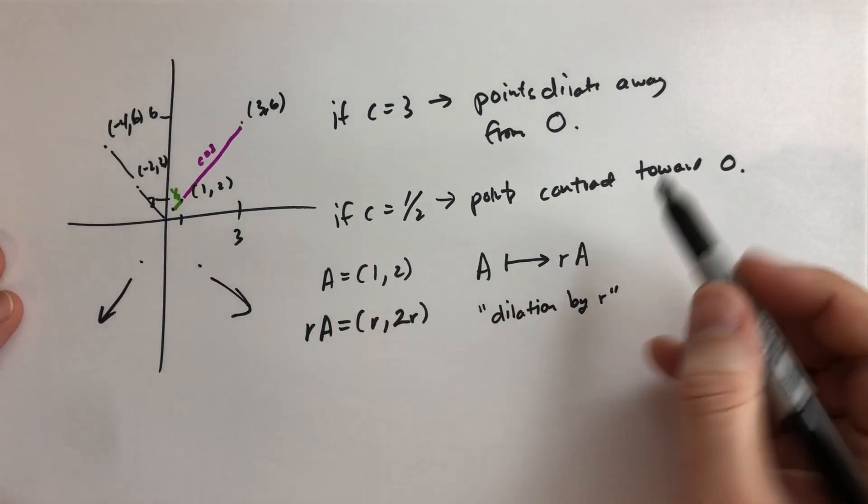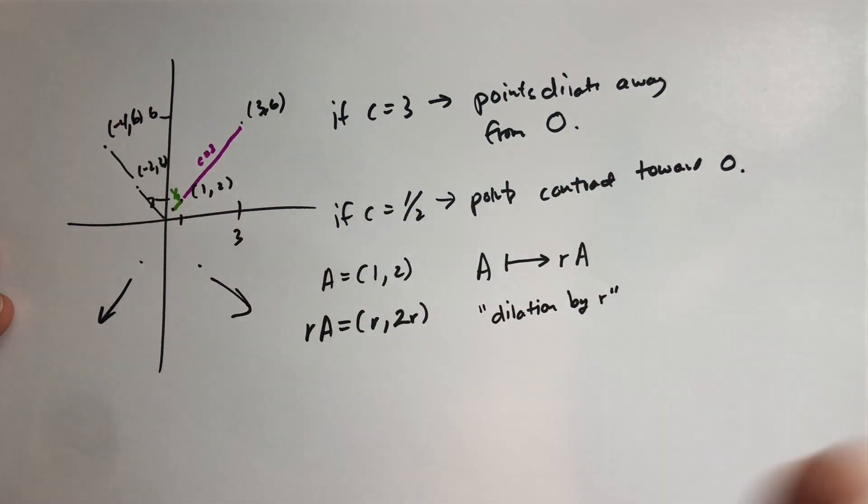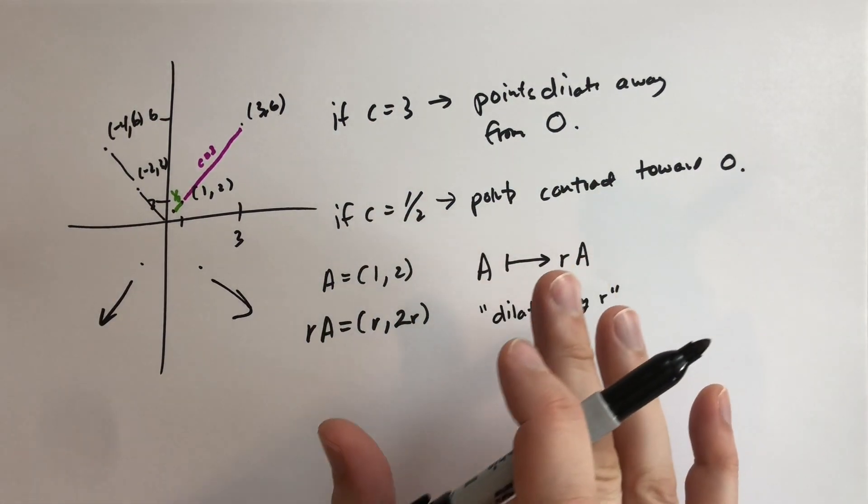And if it's smaller it's going to get closer towards the origin. If it's bigger than one, if it's smaller than one, it's going to get closer to the origin. If it's bigger than one it's going to move away from the origin by that amount.